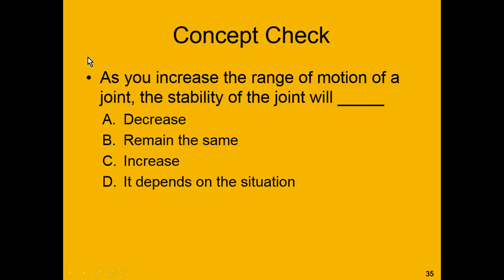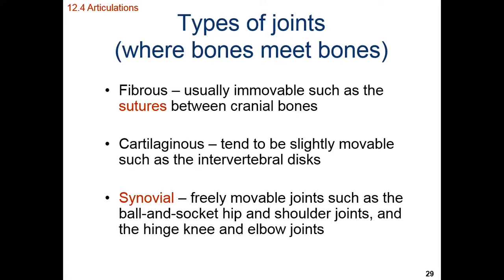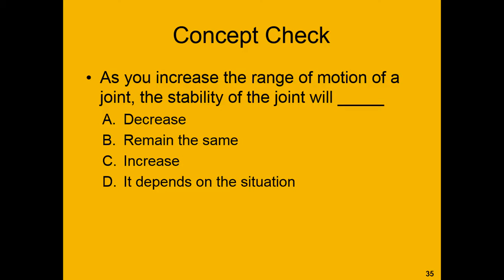The answer is decrease. As you increase the range of motion, you decrease the stability of the joint. Synovial joints — the ones that are very freely movable — are the ones we typically have the most damage occur to. Think of the knees, shoulders, elbows, and hips. Cartilaginous joints you can occasionally have problems with, but not that often. Fibrous joints — the sutures — we almost never have problems with. How many times have you heard someone complain of arthritic pain between their two parietal bones at their sagittal suture? It's never going to happen. But we hear people complaining about pain and joint instability for synovial joints all the time.